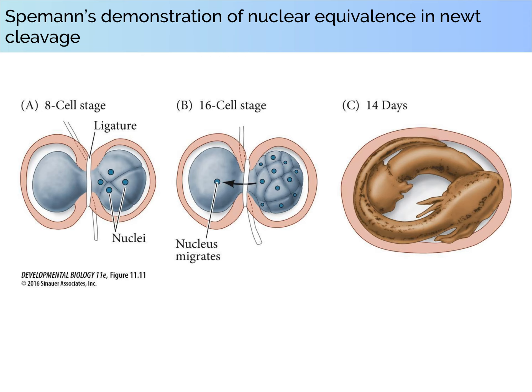Recall that in the last lecture we discussed the specification of the different germ layers and we began discussing the specification of the different axes of the body. Experiments carried out by Hans Spemann and Hilde Mangold were essential for understanding that process. Recall that one of Spemann's early experiments involved ligating an early newt blastula using a human hair at the zygote stage, splitting the Gray Crescent between the two sides of the constriction, parallel to the plane of the first cleavage.